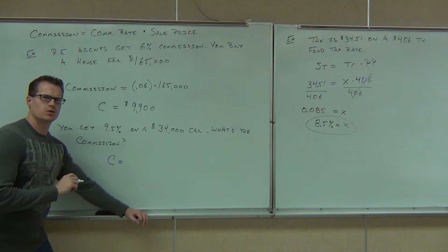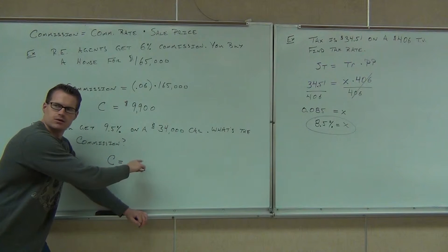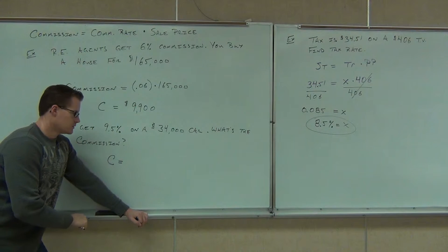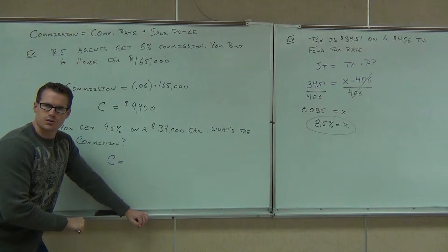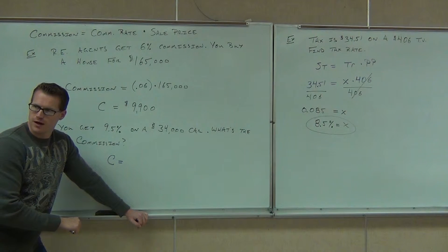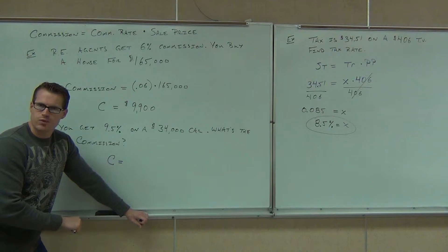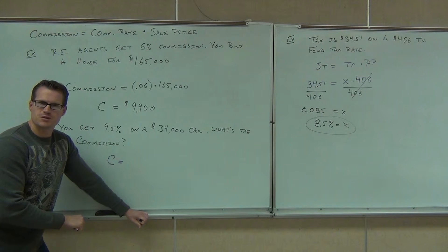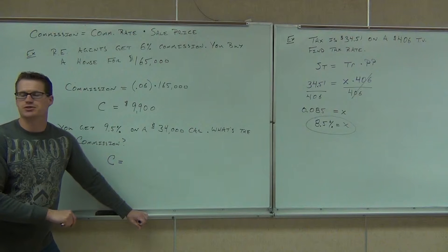So commission equals, hey, what's the first thing you're going to write down? Well, we know the stuff. So what's the first thing? 9.5. Are you going to put down 9.5? No. If you did 9.5, that would be 950%. That would be awesome, but you're not going to make that.